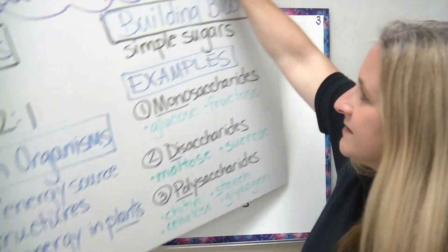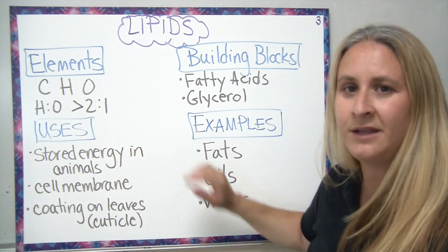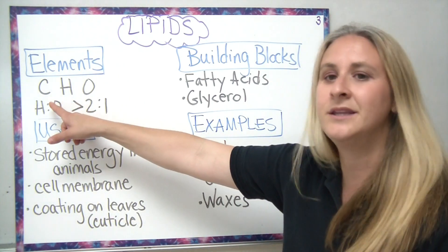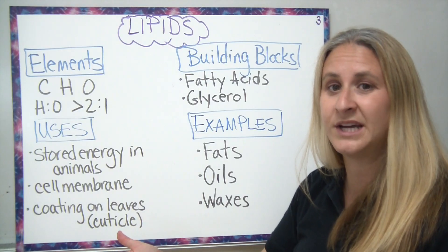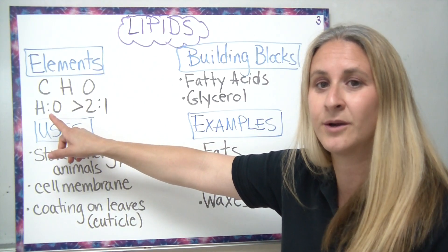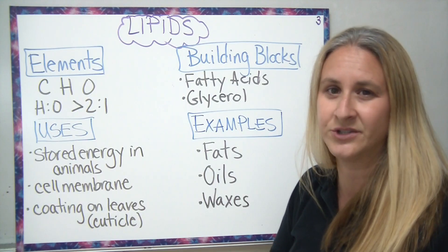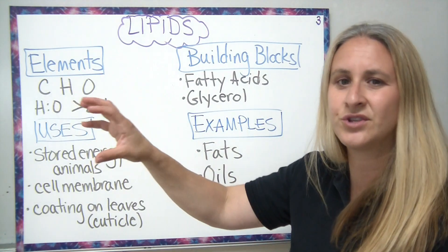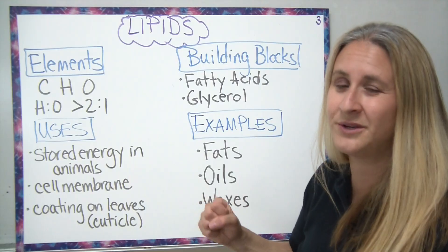Let's move on to lipids, another class of organic compounds. The elements found in lipids are actually the same as carbohydrates — carbon, hydrogen, and oxygen. But one way to tell the difference between a lipid and a carbohydrate, if you're looking at the chemical formula, is that the ratio of hydrogen to oxygen is now going to be greater than two to one. The building blocks of lipids are fatty acids and glycerol. Those fatty acids are long chains of carbon and hydrogen molecules, and every time we break those bonds, we release energy.